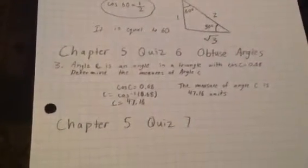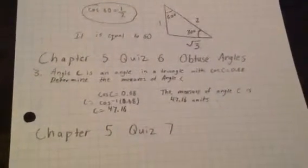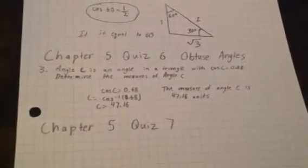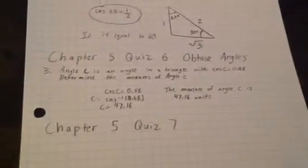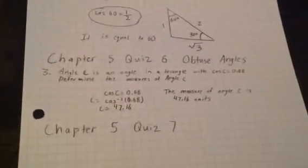So, I'm going to answer Question 3 from that quiz. Question 3 reads: Angle C is an angle in a triangle with cos C equals 0.68 units. Determine the measure of angle C.